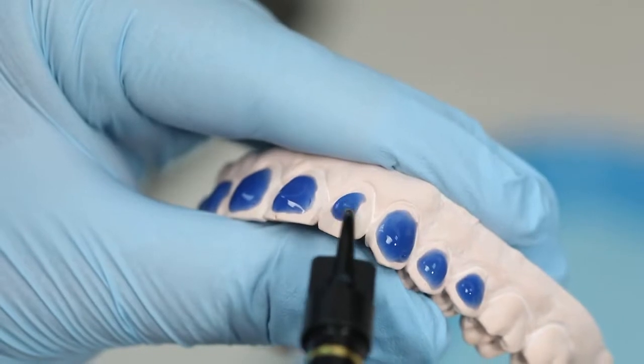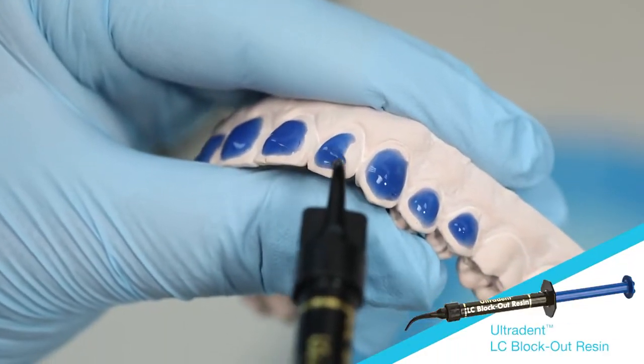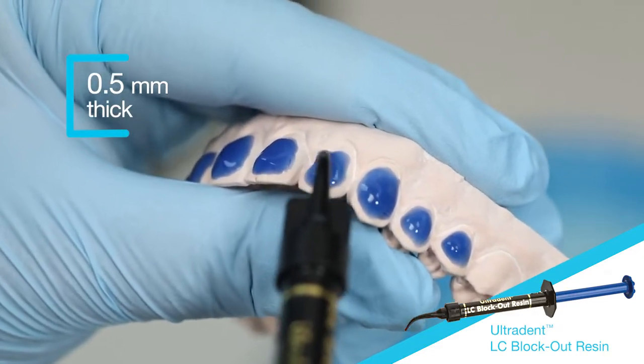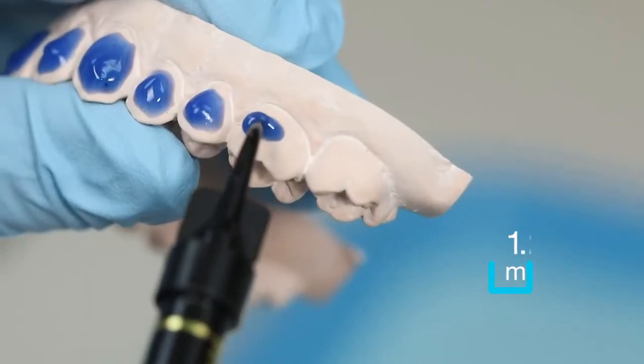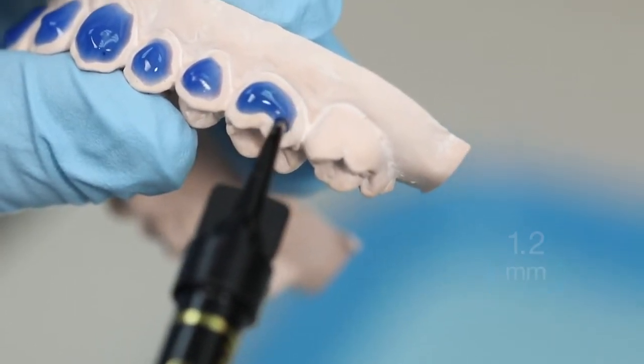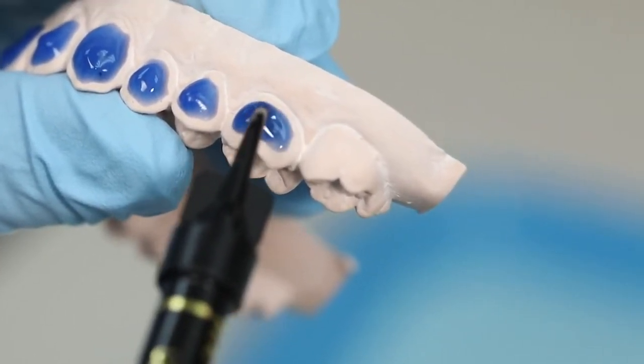For reservoir spaces, apply Ultradent LC Blockout Resin, approximately 0.5 mm thick, onto the labial surfaces. Stay about 1.2 mm from gingival line. Do not extend onto incisal edges or occlusal surfaces.